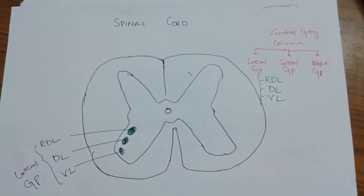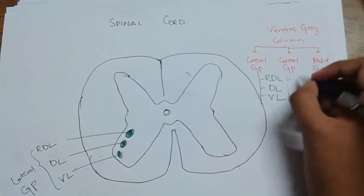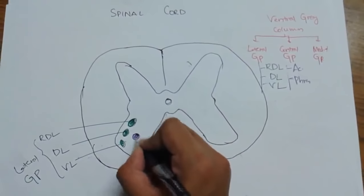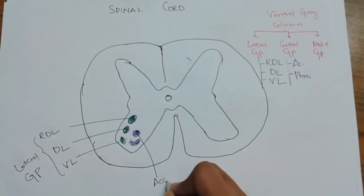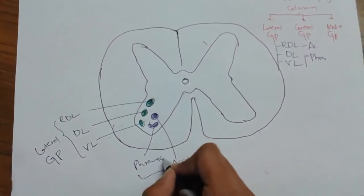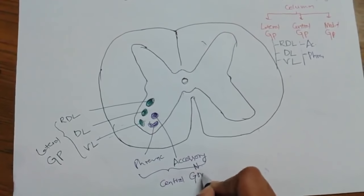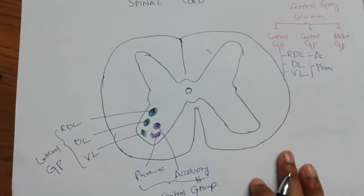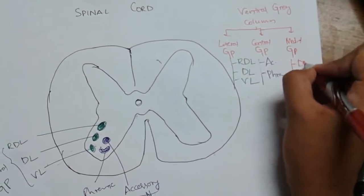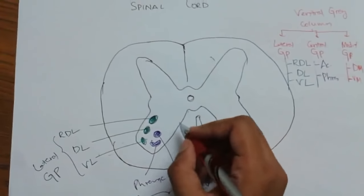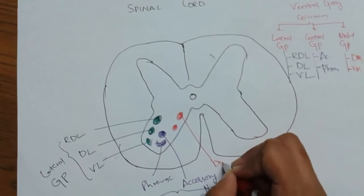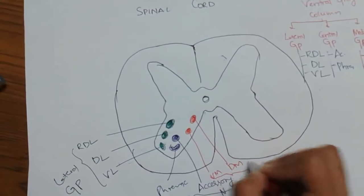The central group has two nuclei: accessory nucleus and phrenic nucleus. Both belong to the central group. The medial group has two divisions: dorsomedial and ventromedial.